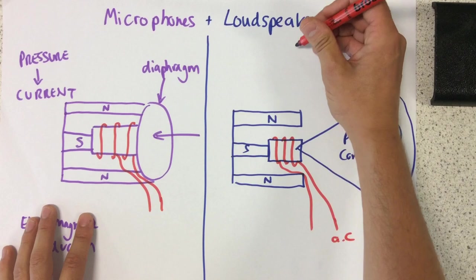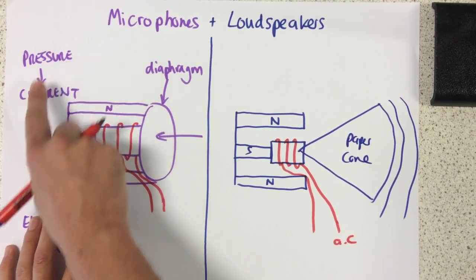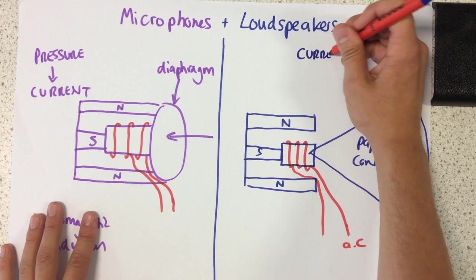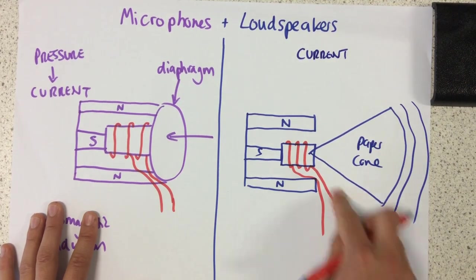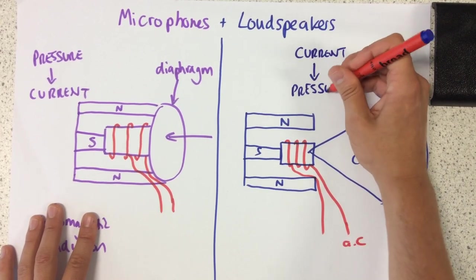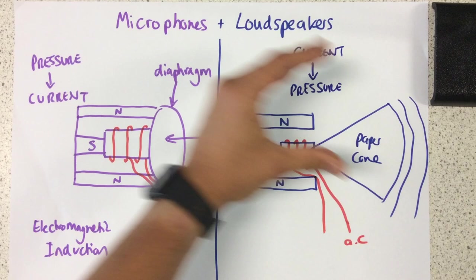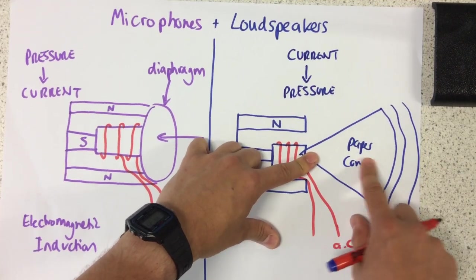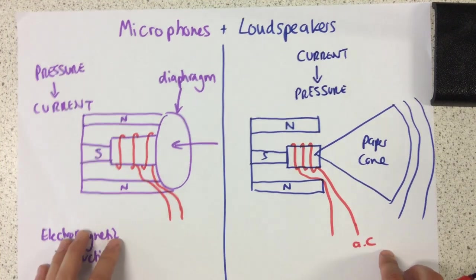This time, rather than starting off with pressure and ending up with a current, we're actually starting off with a current, an alternating current, and we're ending up with pressure. And the pressure, which vibrates that paper cone forwards and backwards like that, that is what causes those sound waves and that is what people can hear.